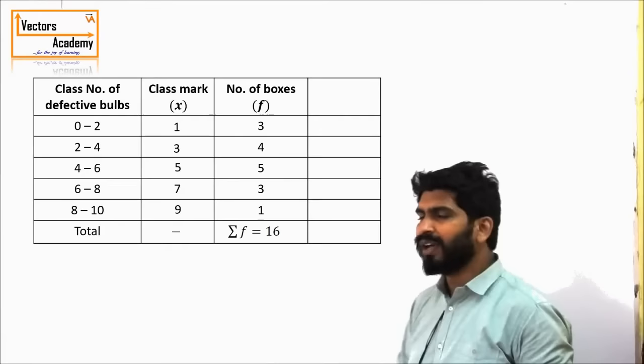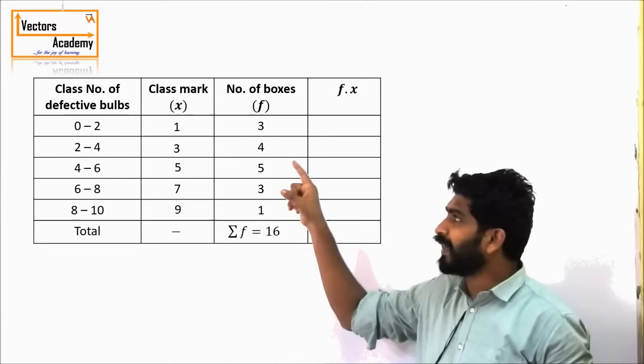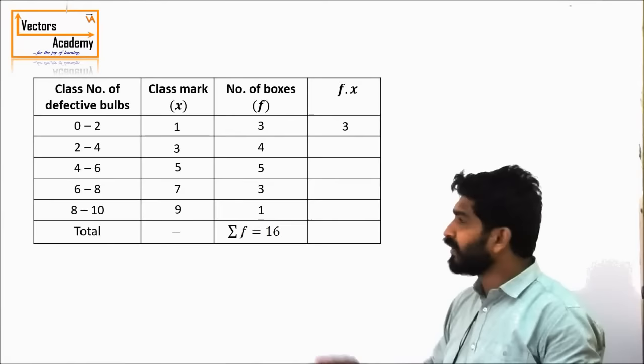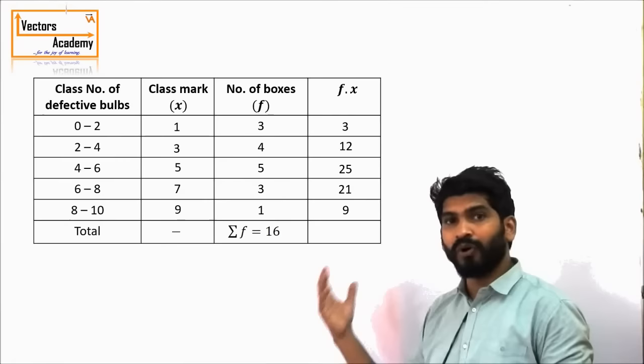How do we do this? We multiply the class mark with the frequency. The class mark represents the average number of defective bulbs in that class. So 1 defective bulb in 3 boxes — 1 × 3 gives you 3. Likewise, 3 defective bulbs in 4 boxes — 3 × 4 gives you 12 defective bulbs. This column F × X represents the total number of defective bulbs in all the boxes, and the total number of boxes is 60.